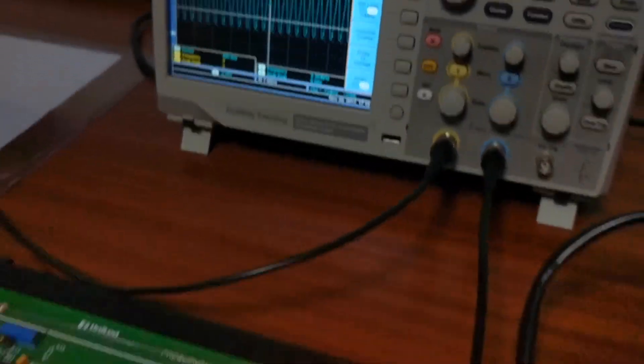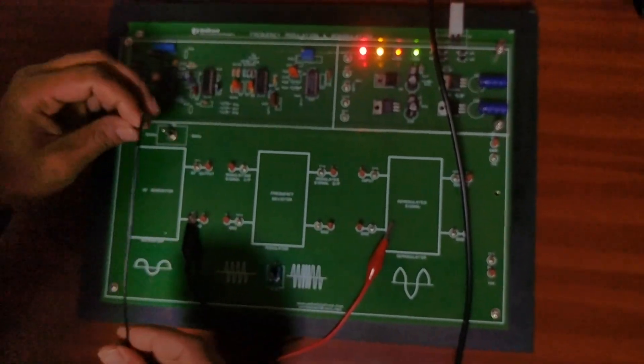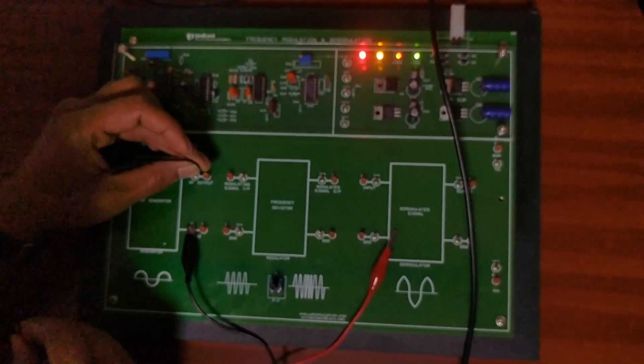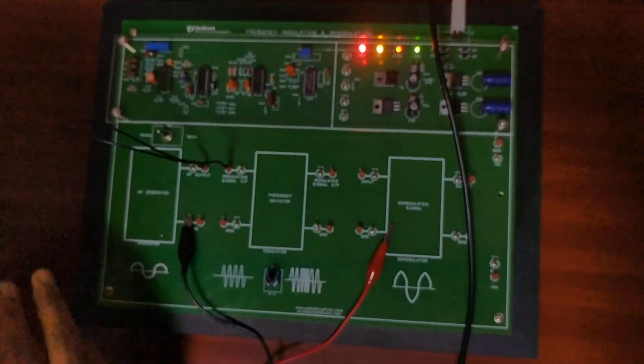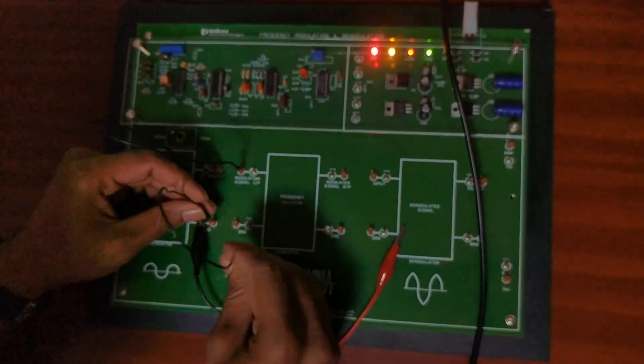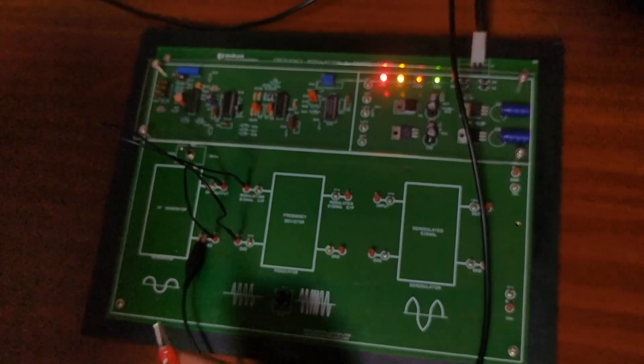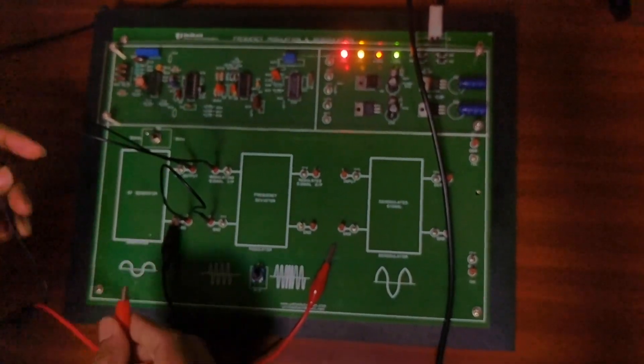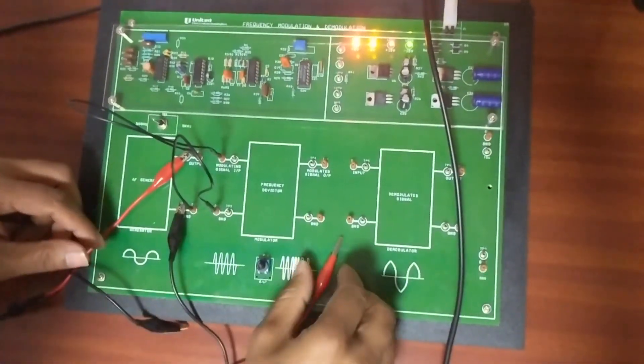Now after checking these two individual signals, you can rig up the circuit like this. Connect the test point S01 output to the modulating signal input. And as usual you will ground to ground. One ground is enough for your DSO.